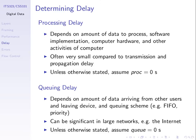Queuing delay is the time spent waiting in intermediate devices — we'll assume it's zero or small for now, and return to it after the midterm when we talk about the internet. So the four components of delay are: transmission, propagation, processing, and queuing. For now, focus on the first three.